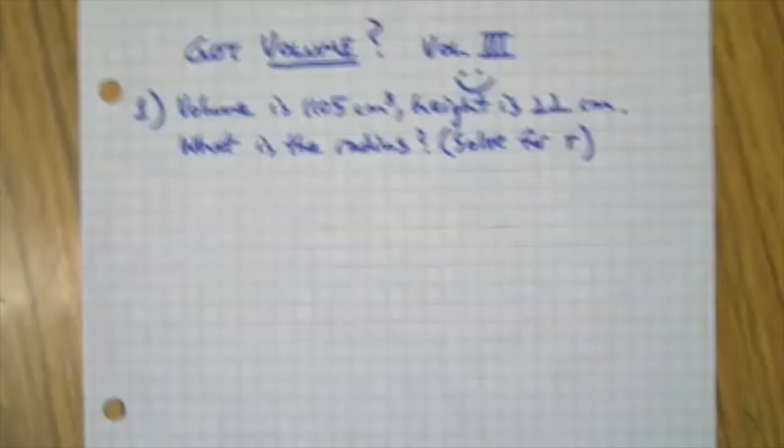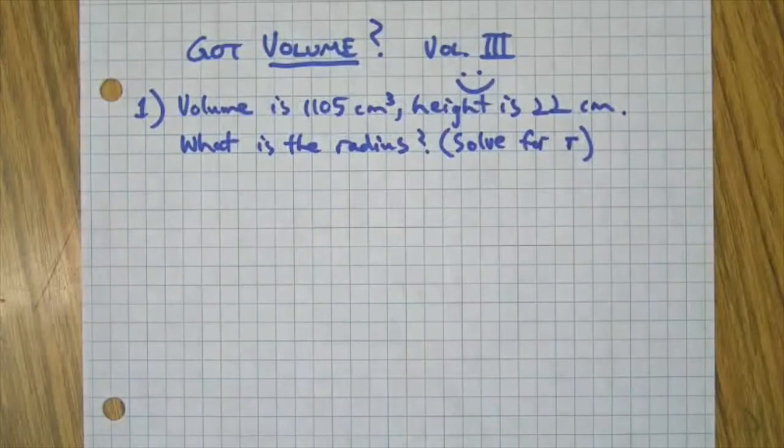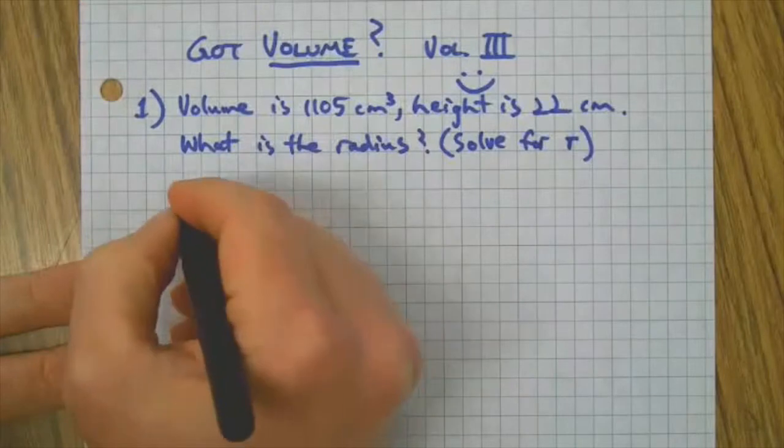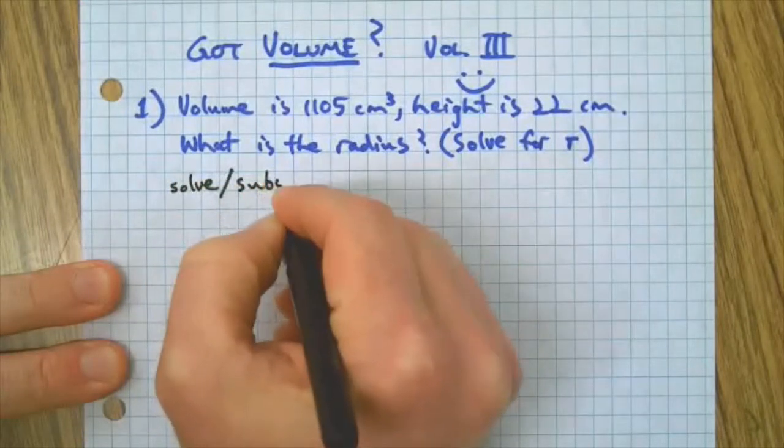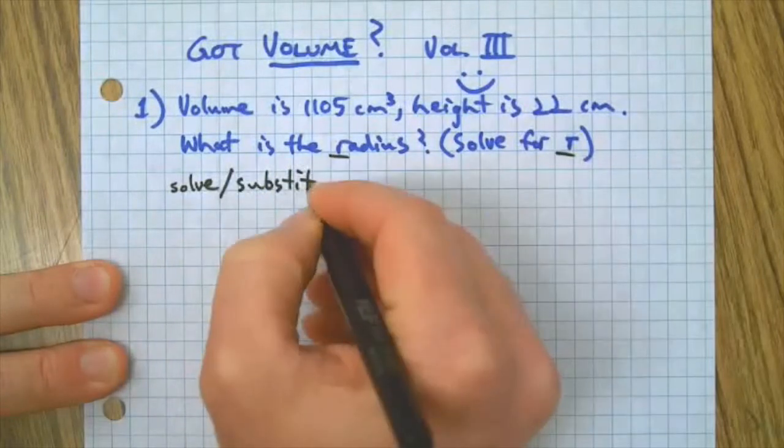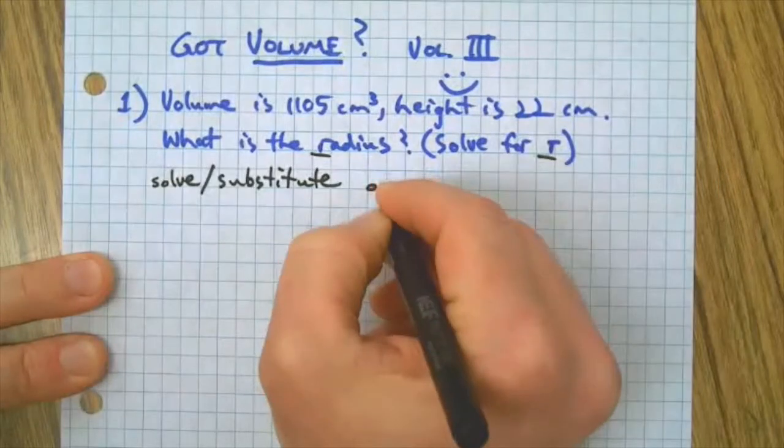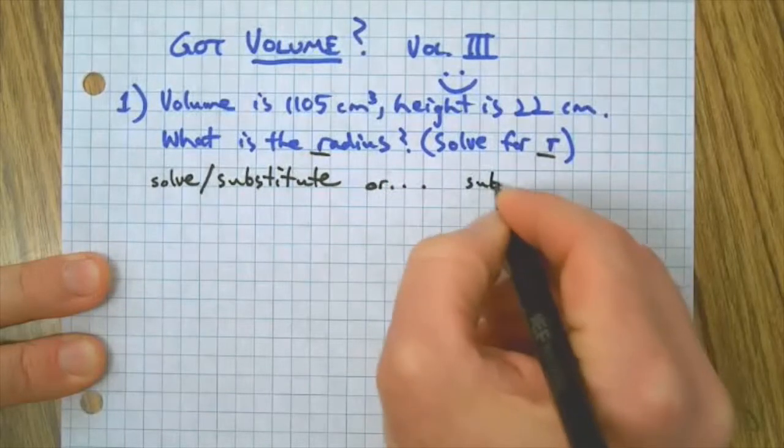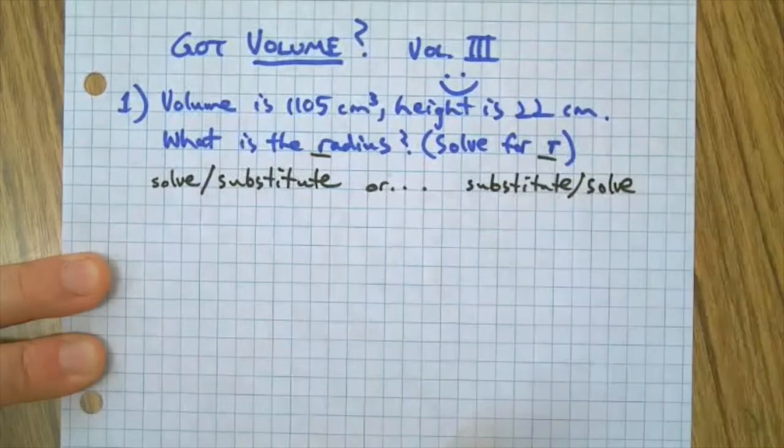All right, here we are. We've got a couple of choices. We can solve this problem for r—we could solve for r first, then substitute numbers in and get our answer. Another way is we can substitute all the numbers in first and then solve for r. Either way, we'll get the same answer.